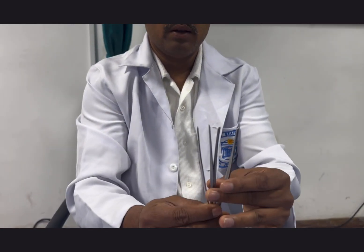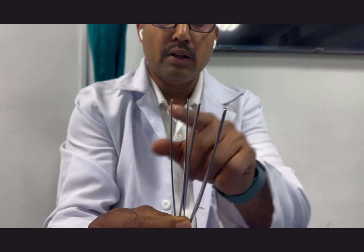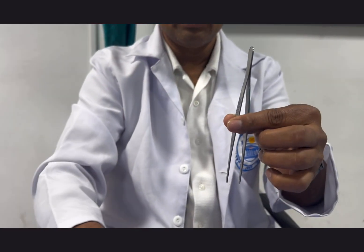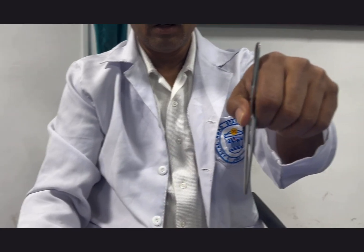You can see this is a forcep. See the difference here - one is tooth, one is plain. The holding technique is just like a pen or chopstick like this.